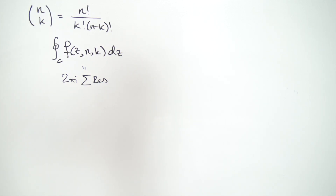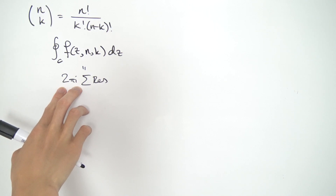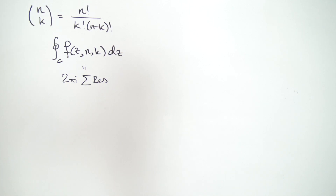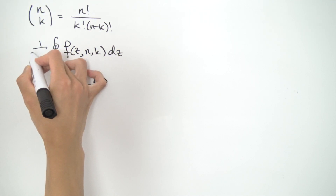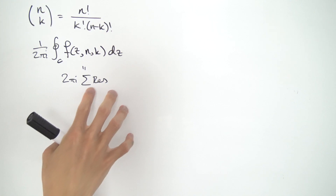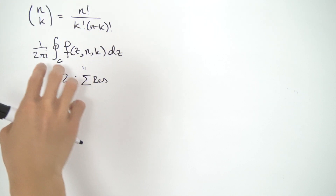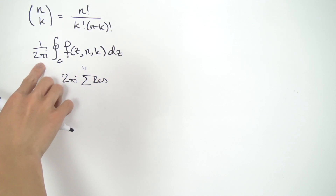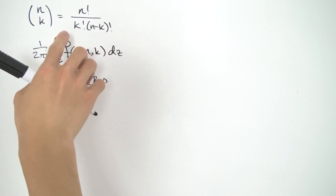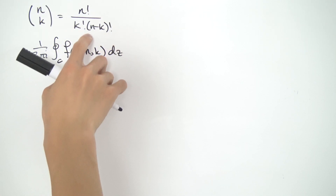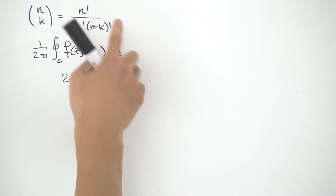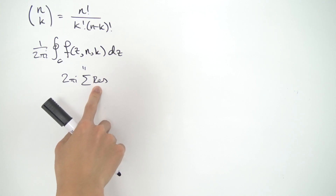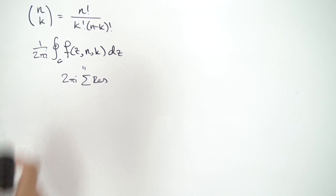Now, assuming we can use Cauchy's residue theorem, the contour integral is equal to 2πi times the sum of the residues of your function. To avoid carrying this 2πi factor around everywhere, I'm just going to divide it off straight away. If our residues end up being real, that's a good thing because our binomial coefficients are also real.